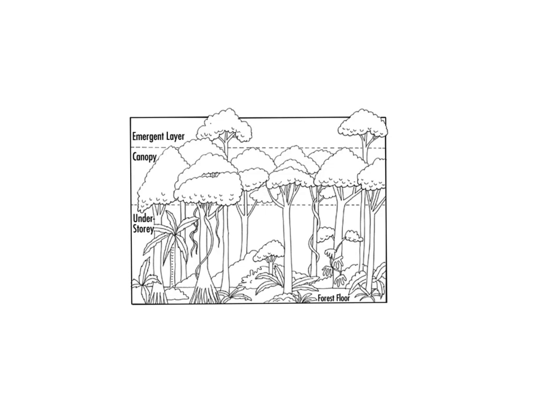Tropical rainforests have four different layers. The tallest trees are known as the emergents, and they're really tall because they're reaching up for the sunlight. That's why they're growing upwards.